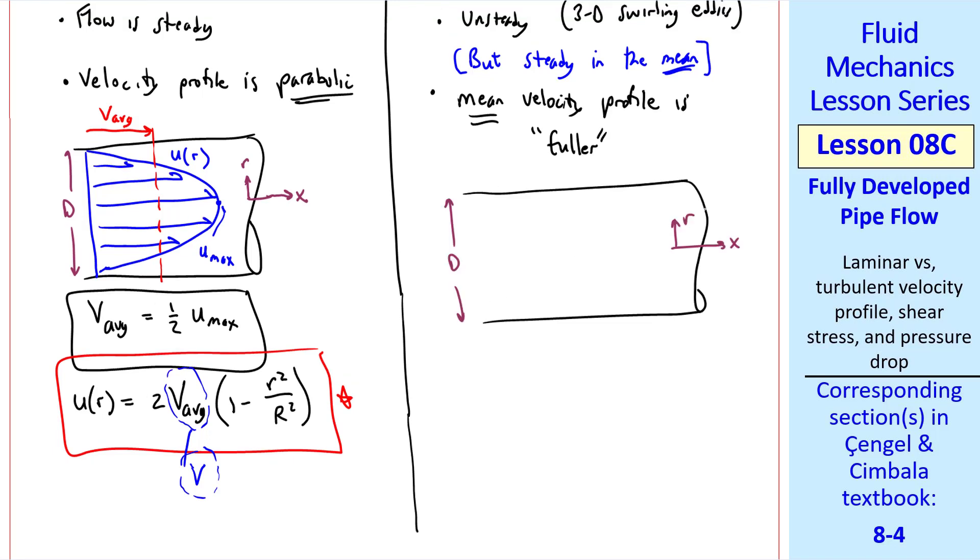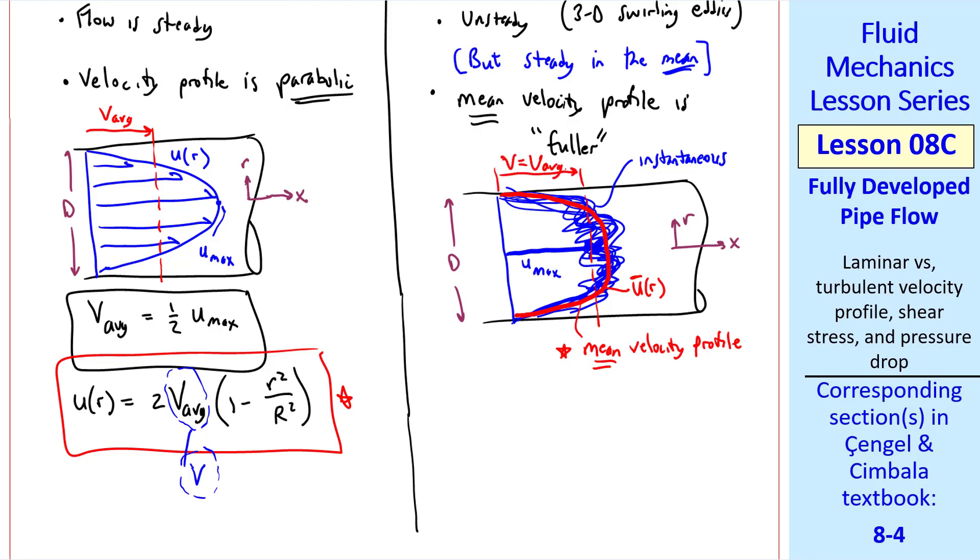Now let's draw the turbulent case. We use the same coordinate system, and u is still a function of r in the mean. But the instantaneous velocity profile can look something like this since there are all these turbulent eddies. A short time later it might look like that. And if we keep taking lots of different profile tests, we see that there's lots of scatter because of all the turbulent eddies. So what we generally do is average these over time and generate a mean velocity profile, which looks like this thick red line, which is now u of r or u bar of r since it's an average.